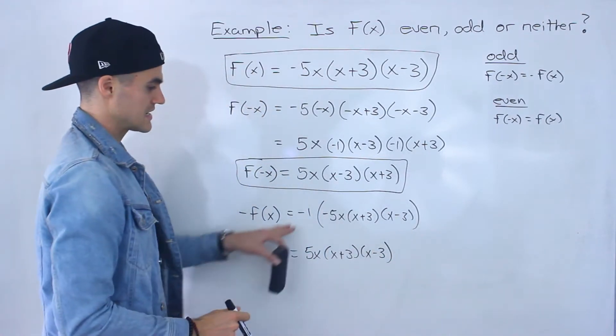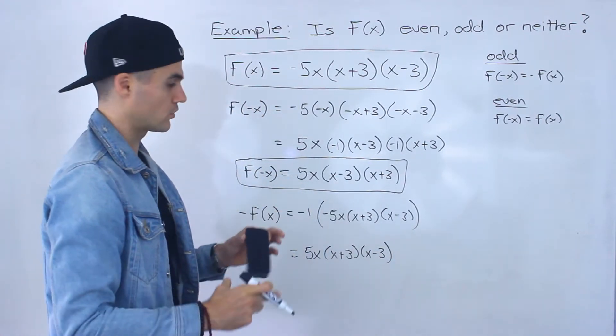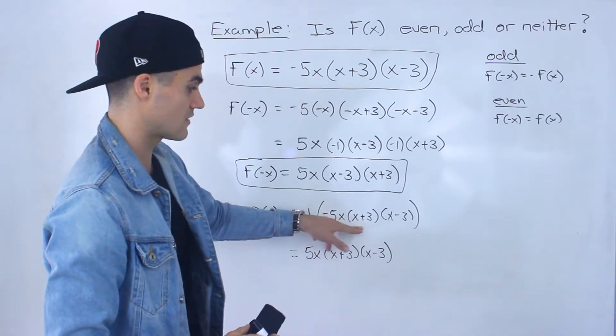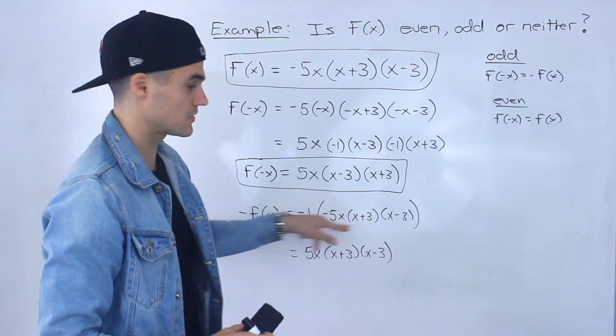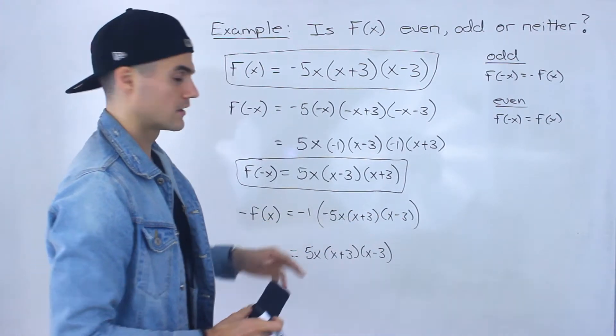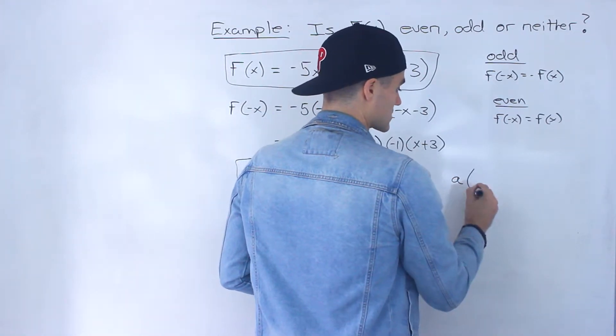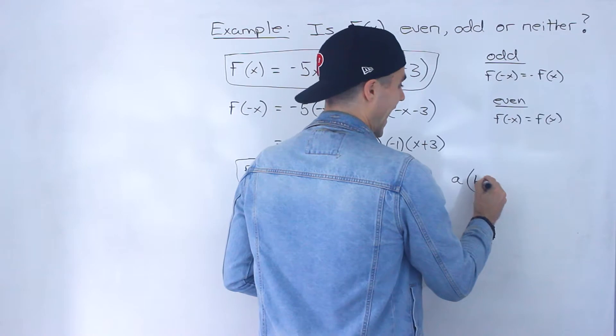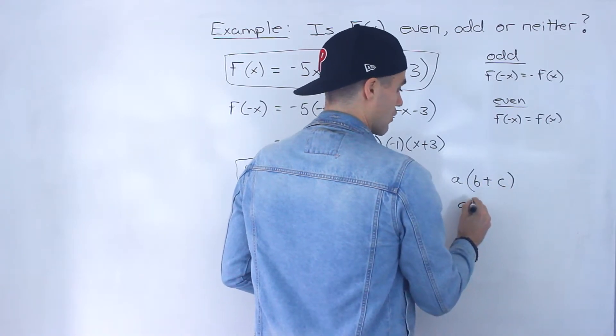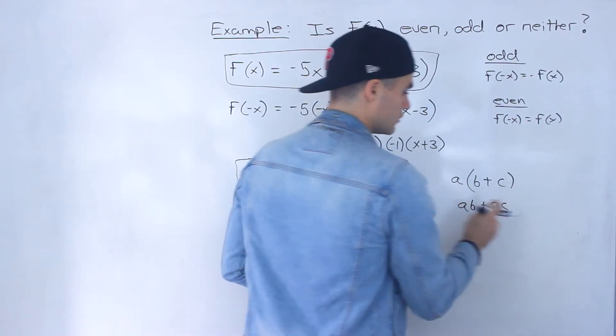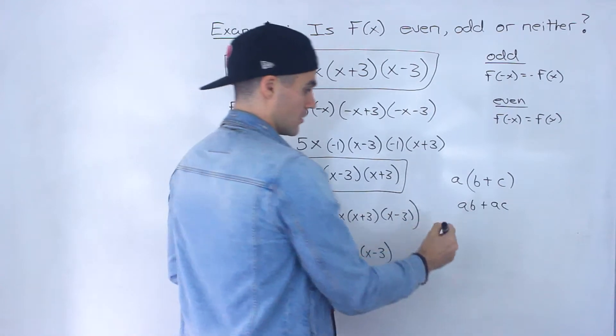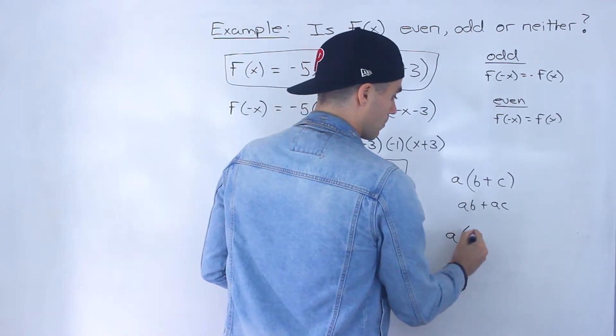Now be careful—this negative 1 you don't distribute, quote unquote, to this expression and then this expression and then this expression, because they're all multiplying. Just to do a quick review of fundamentals, if you got something in front and you're adding expressions, then you can distribute. But if you got something here and you're multiplying expressions in the bracket like we're doing here, then you just multiply everything.